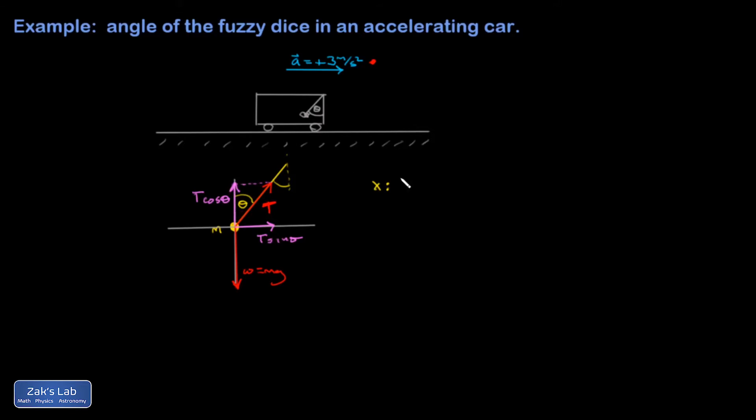So back to my x analysis. I have T sine theta, that's the only force I see in the x direction. And that's going to be equal to m times the x acceleration, which is just 3 meters per second squared. I'll just leave it as an a for now.